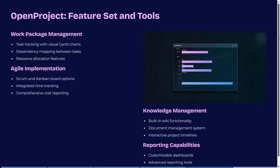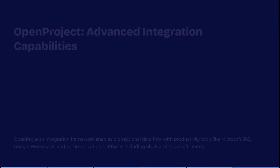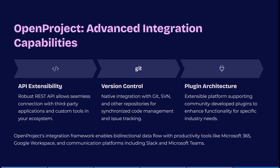OpenProject has work package management with task tracking via visual Gantt charts, dependency mapping between tasks, and resource allocation features. It also has Scrum and Kanban board options, an integrated time tracker, and comprehensive cost reporting. It also has a robust REST API, which allows seamless connectivity with third-party applications as well as custom tools in your ecosystem. There's also native integration with Git, SVN, and other repositories for synchronized code management and issue tracking.